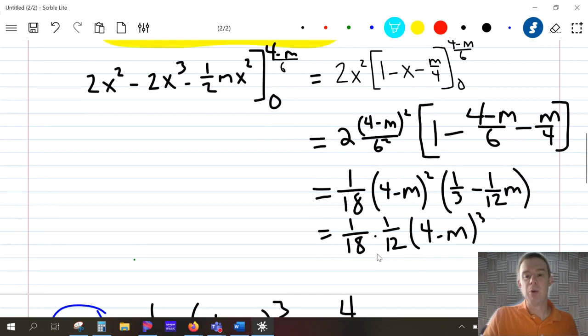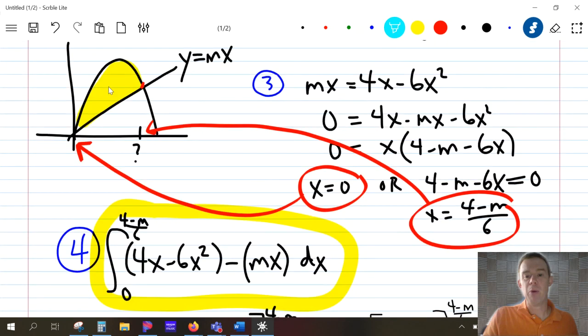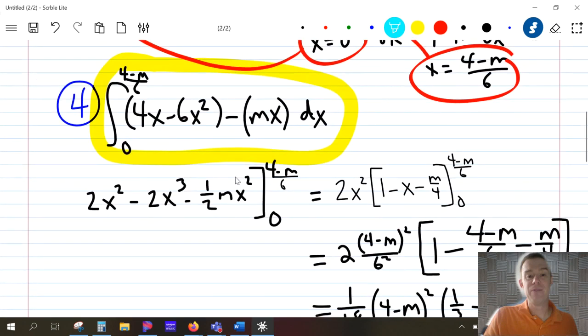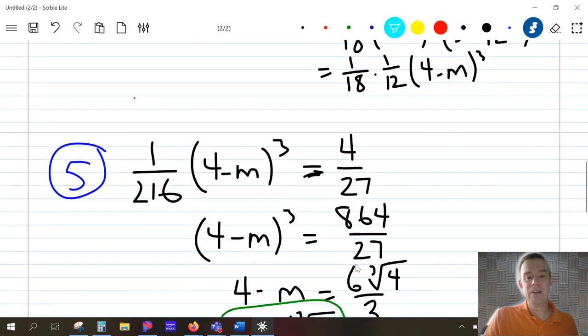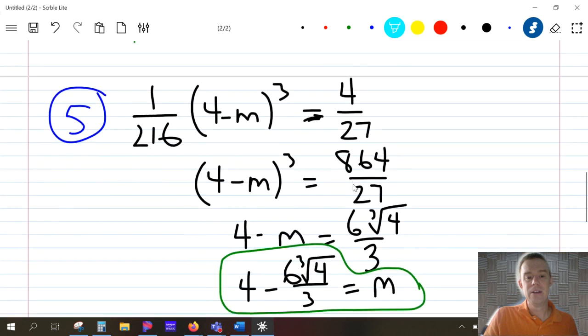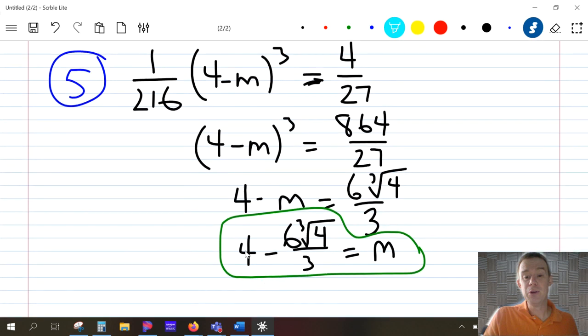Now remember, what does this mean? This represents the area, this yellow area that I was trying to find earlier. And remember, that yellow area we already found the size of, it's 4/27. And so if I take this expression and I set it equal to 4/27, just do a little bit of algebra, multiply both sides by 216, take the cubed root, and solve for m, you end up with this value here. So you could type this into MyOpenMath or the decimal approximation.